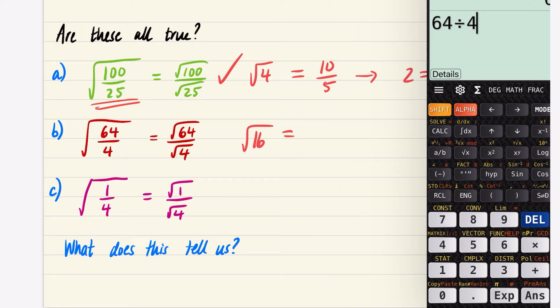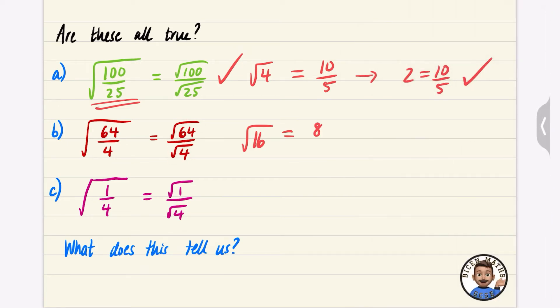And if I do these bits separately, if I do the square root of 64 and the square root of 4, the square root of 64 is 8, and the square root of 4 is 2. Well let's do this part again. The square root of 16 is 4, and 8 divided by 2 is 4. Yeah, that one's true, so this must be true.